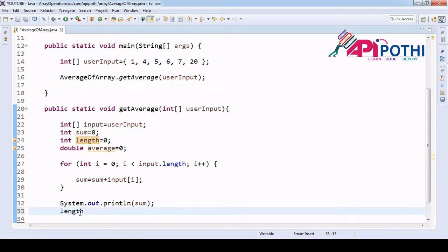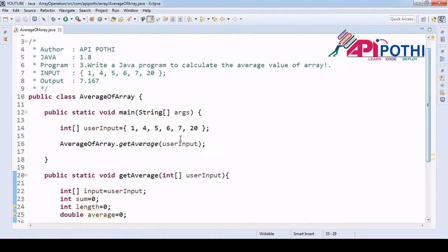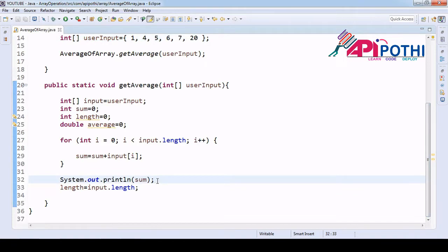Now we got the sum. Let's first get this length that will help us. For this array, what is the length? It starts from zero. Length is how many total number of elements are there. Three plus three is six.